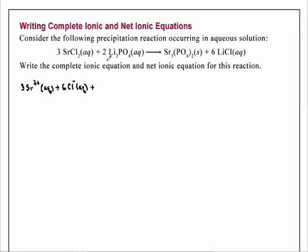The 2 Li3PO4 aqueous exists as 2 times 3, that's 6 lithium +1 ions, plus 2 times 1, that's 2 phosphate ions.